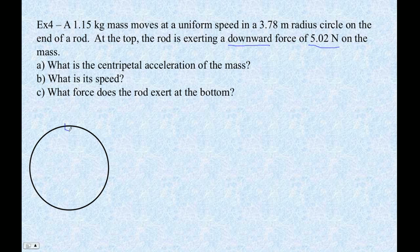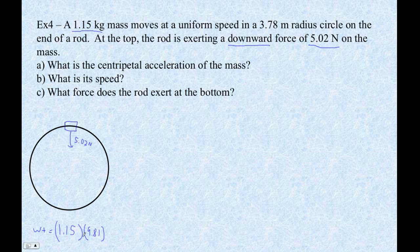So here's this object. We know that there's a downward force on this thing, and that downward force is 5.02 newtons. That's not the only force though — there's also the force of gravity on this thing, so the weight is going to be 1.15 times 9.81, which is 11.2815 newtons. So that's the force of gravity acting down — it's a bigger force, so I'll draw that vector about twice as long.